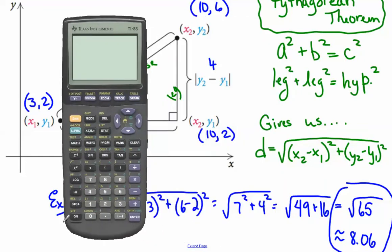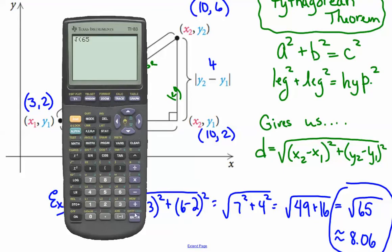To do that, I would come over here, and I would just simply go to the square key, but above it there's a square root, so I need the yellow button, second, and then square root, 65. And enter. And there's my 8.06.